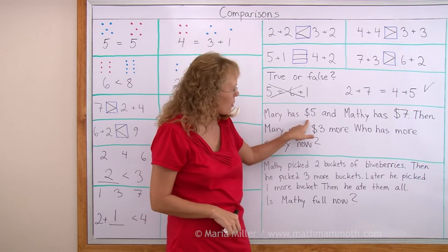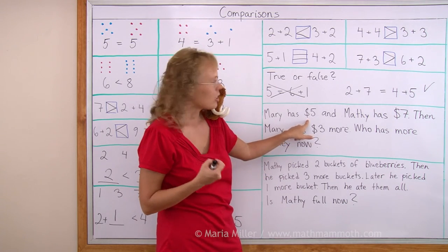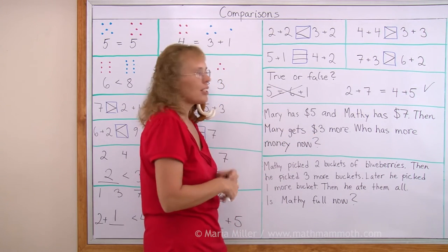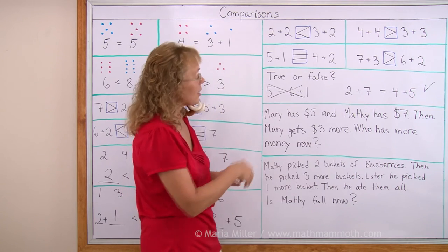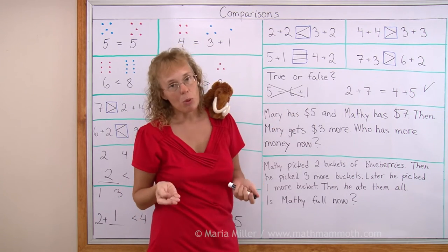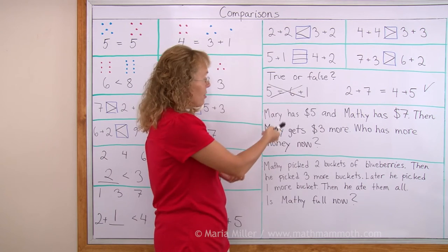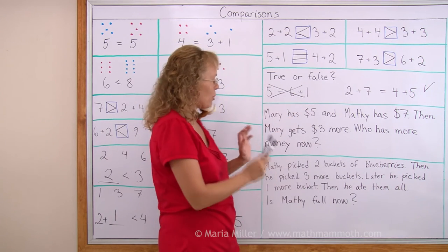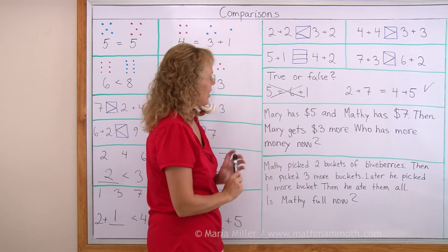Mary has 5 dollars. Remember this symbol? It means dollar. This means 5 dollars. Mary has 5 dollars of money. Matthew has 7 dollars. So Matthew has more. Then Mary gets 3 dollars more. Now who has more money now?